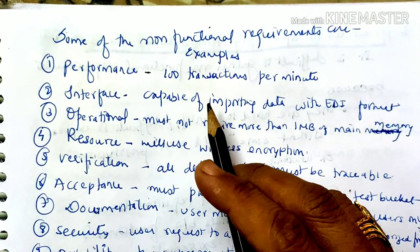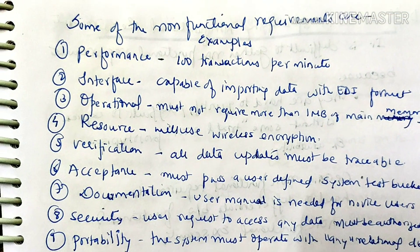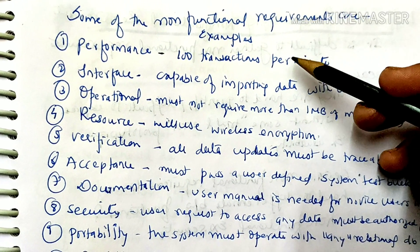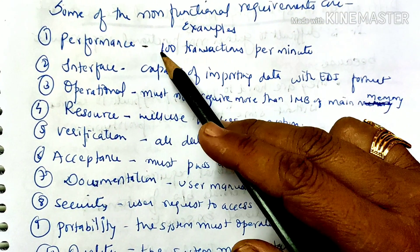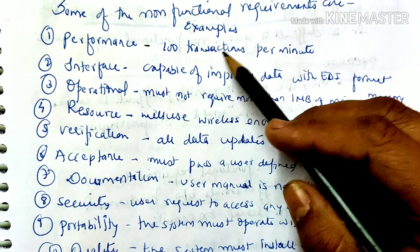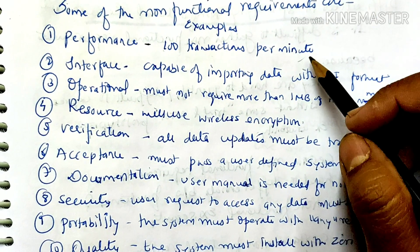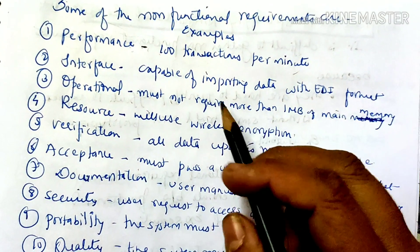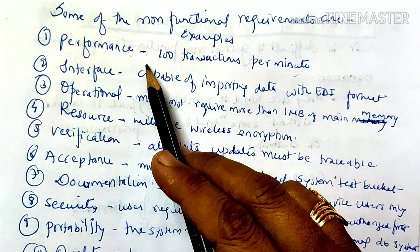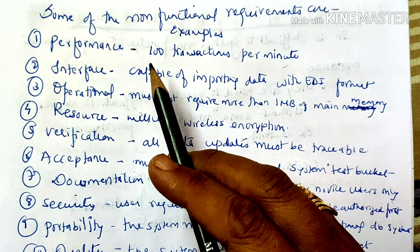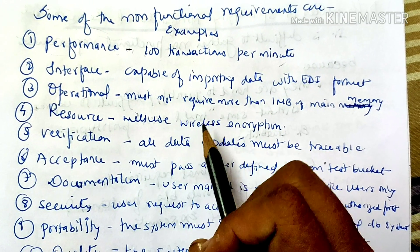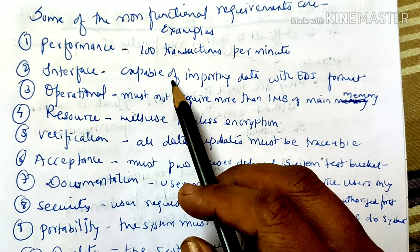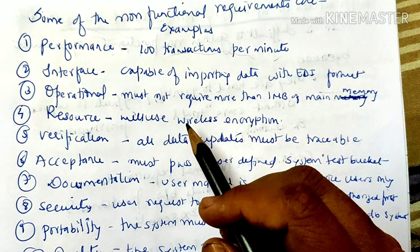Some examples of non-functional requirements include performance, like 100 transactions per minute. Performance is a non-functional requirement which the customer expects — for example, the system should perform 100 transactions per minute. Another example is interface capable of importing data with EDI format.